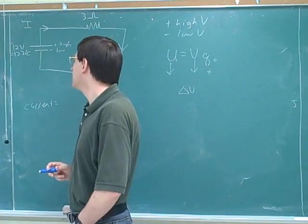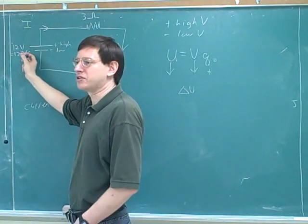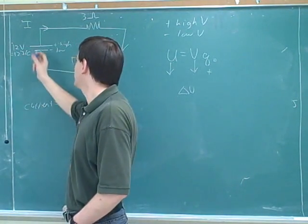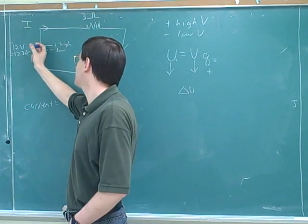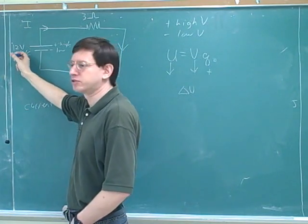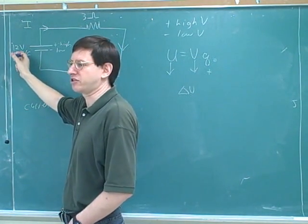It's kind of like the ski lift. In our analogy, the skiers are like the coulombs. Every time the ski lift lifts a skier up to here, it might be doing 12 joules of work and giving them 12 joules of extra energy.